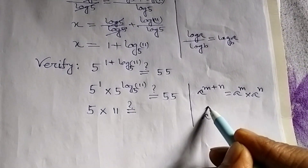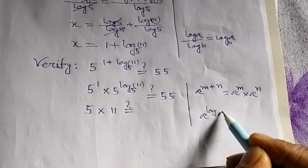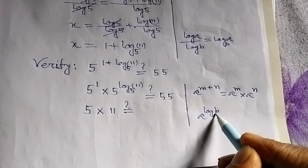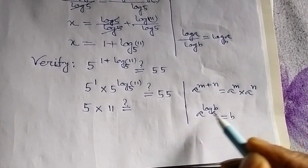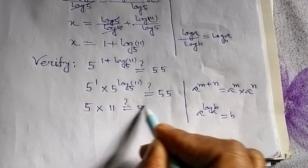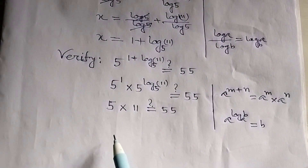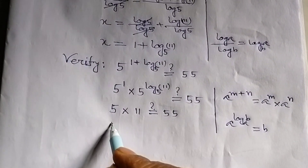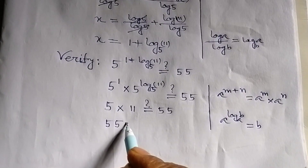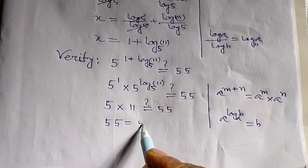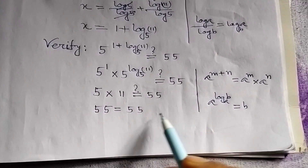Since we know the formula a^(log_a(b)) = b, therefore 5^(log₅(11)) = 11. So 5 × 11 = 55. Therefore, 55 equals 55. This proves our answer is correct.